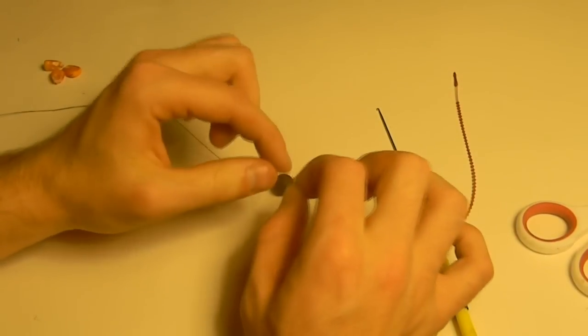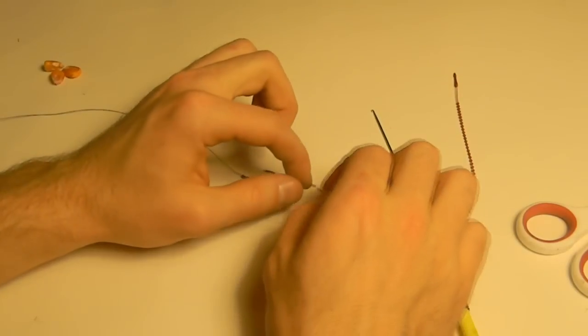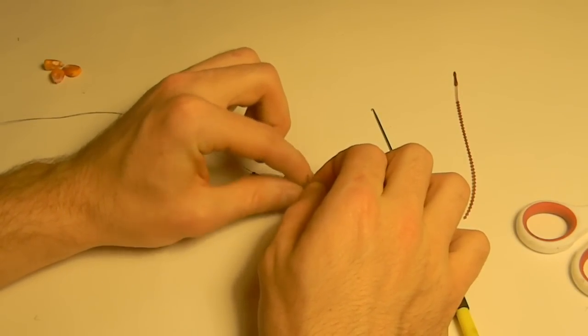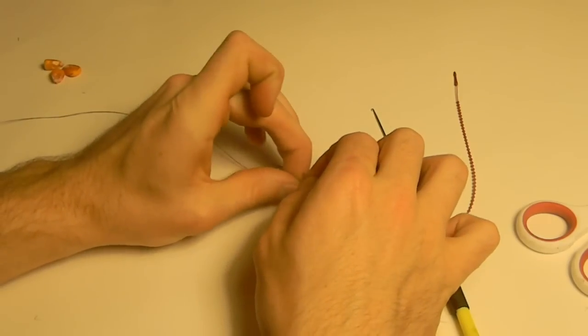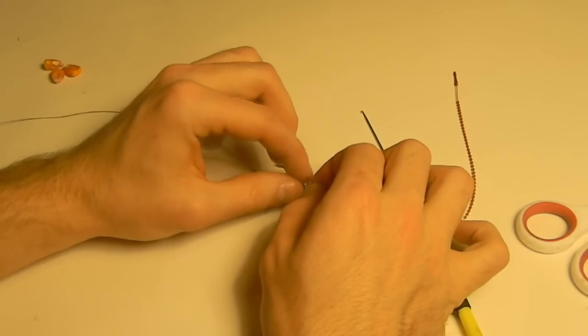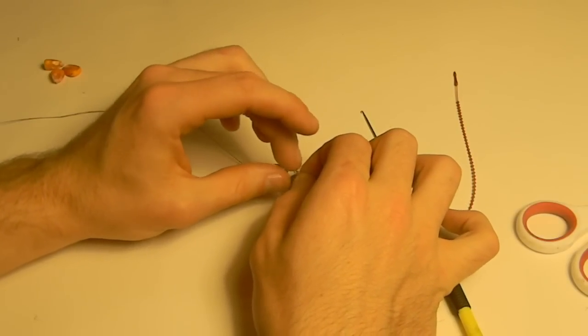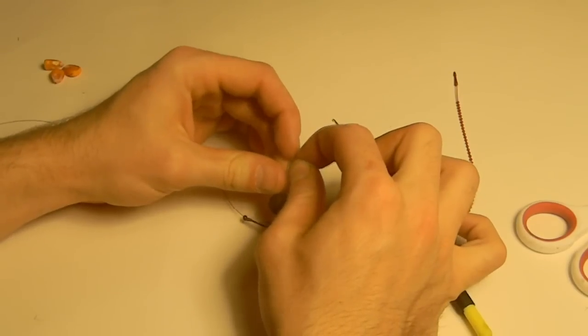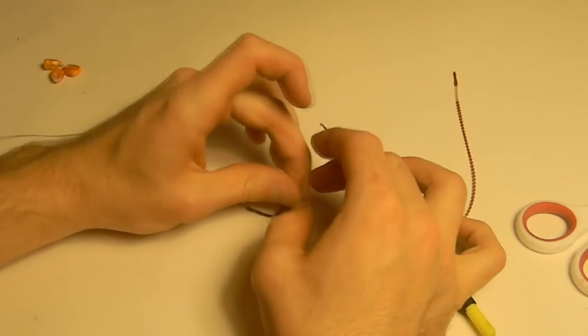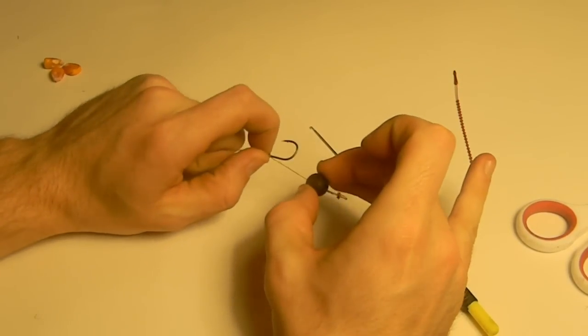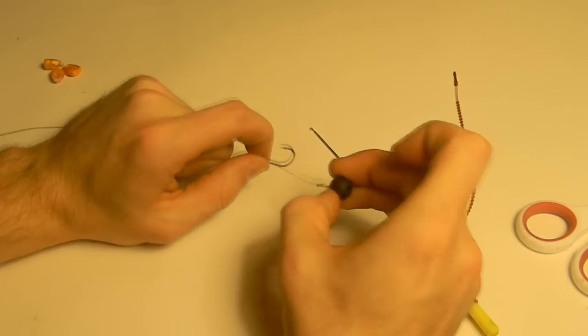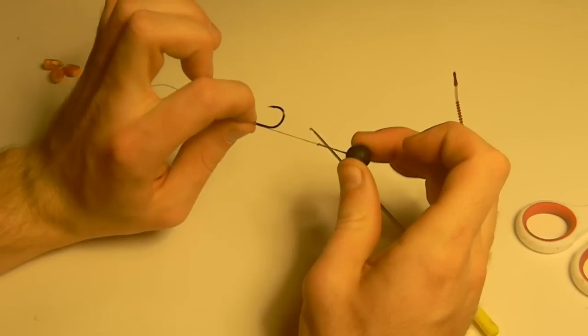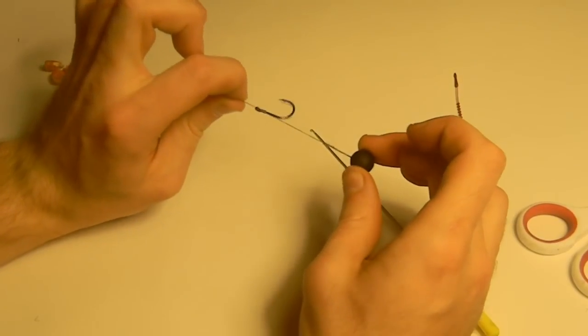Next, you're going to take one of your boilie stops, which looks like a dumbbell. You're going to insert your boilie stop into the middle of your loop. So you have your boilie stop, and you're going to pull your bait back towards the end, and it's going to sit just like that. The boilie stop is going to not allow your bait to fall off.